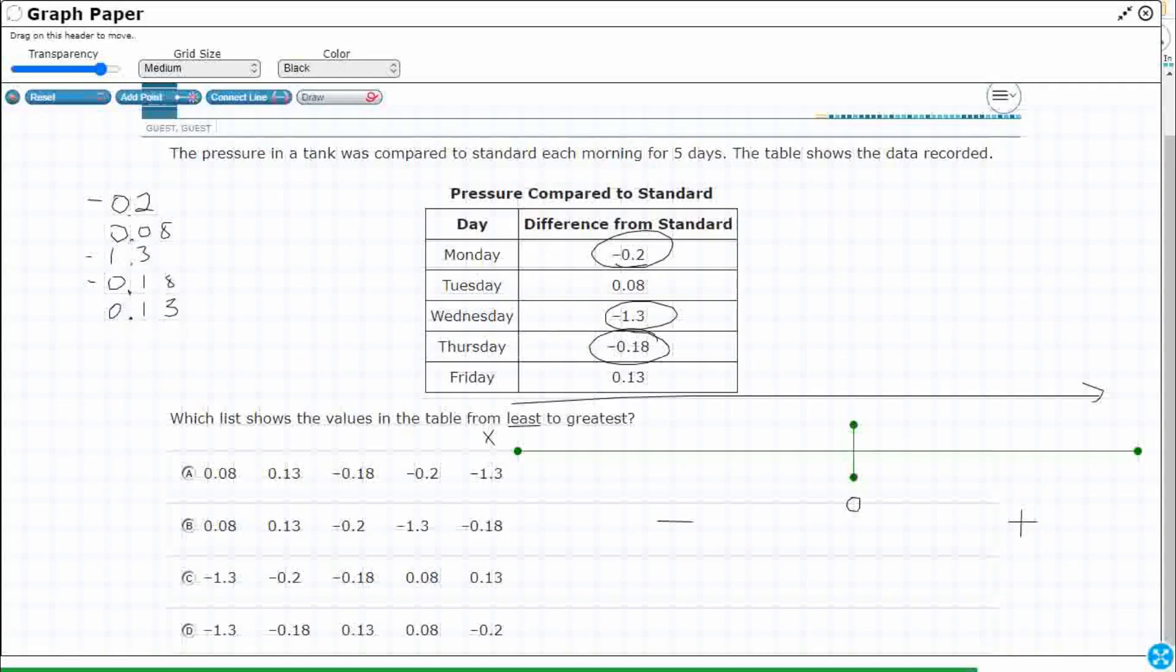So one thing is, let's go ahead and make them all go to the hundredths spot, which is right here. And it's easy to do that because you can always add as many zeros as you want after a decimal and it doesn't change it. So negative 20 hundredths is the same as negative 2 tenths. Negative 1 and 30 hundredths is the same as negative 1 and 3 tenths. So now we've got all those.